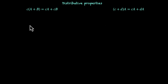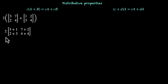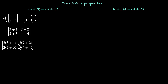Let's look at some examples. Let's take this one first: 2 times the sum of two matrices, [3, 7, 2, 4] and [1, 2, 3, 4]. If we add these two matrices, we add the corresponding elements, giving 2 times [3+1, 7+2, 2+3, 4+4]. Now let's multiply 2 with each of these elements: we have 2 times (3+1), 2 times (7+2), 2 times (2+3), and 2 times (4+4).